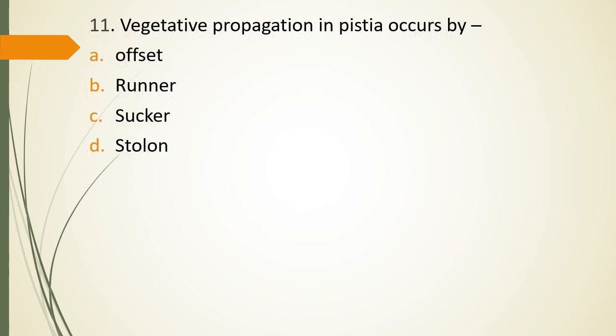Question 11. Vegetative propagation in pistilla occurs by offsets, runners, suckers or stolon. Vegetative propagation in pistilla occurs by? The correct answer is Option A. Offset.